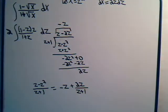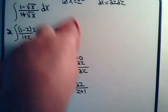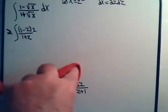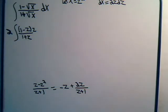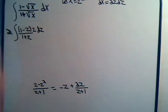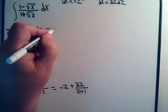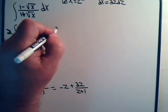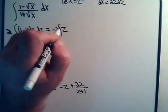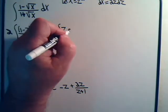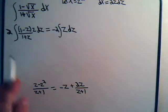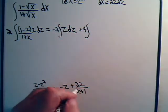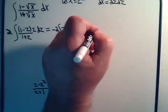Let's go back up to our integral. This will equal 2 times minus z, so we have minus 2 times the integral of z dz. And 2 times 2 is 4, plus 4 times the integral of z over z plus 1.